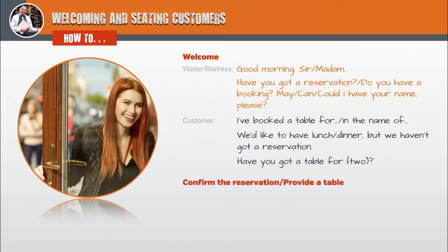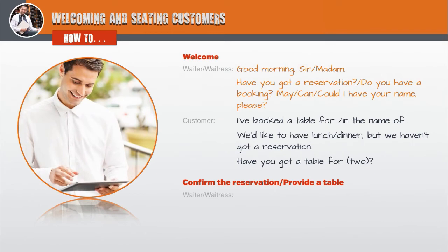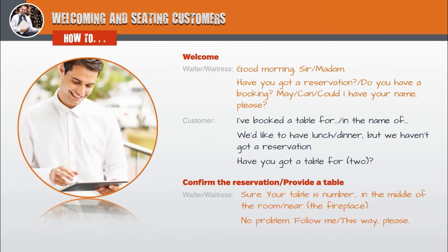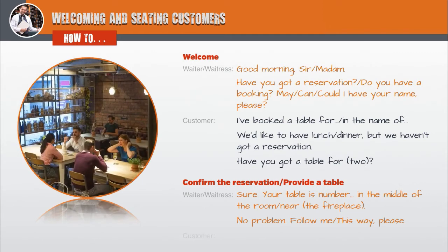How to confirm the reservation and provide a table. Waiter, waitress: Sure, your table is number... in the middle of the room, near the fireplace. No problem. Follow me. This way, please. Customer: Thank you. Thanks.